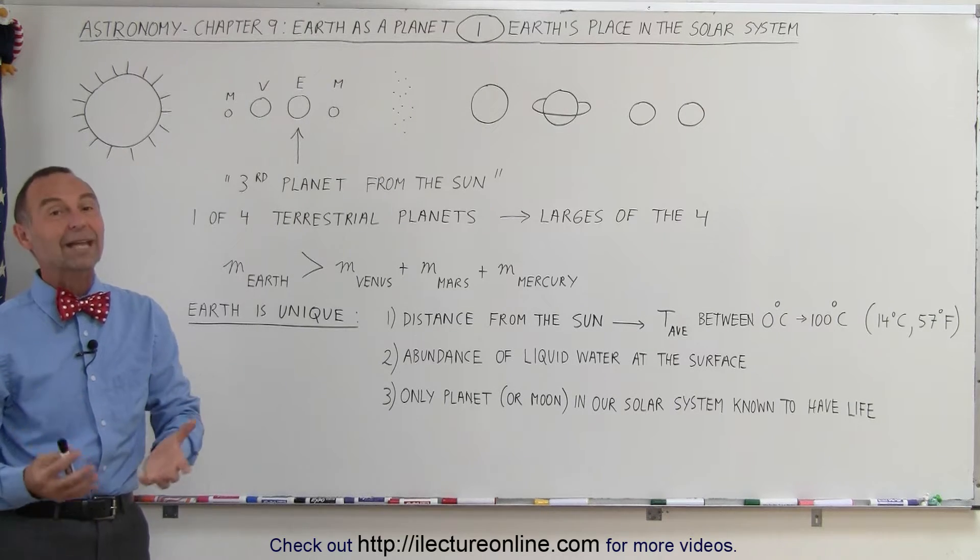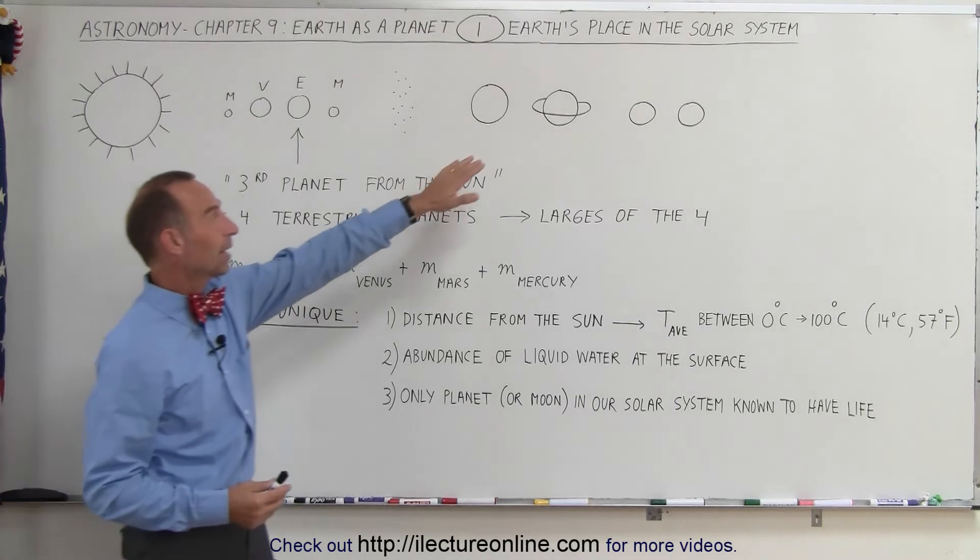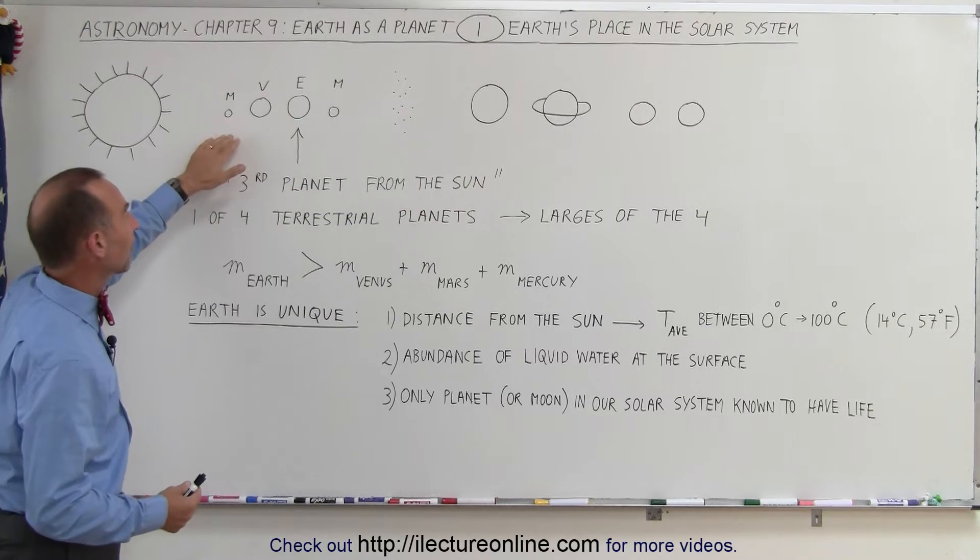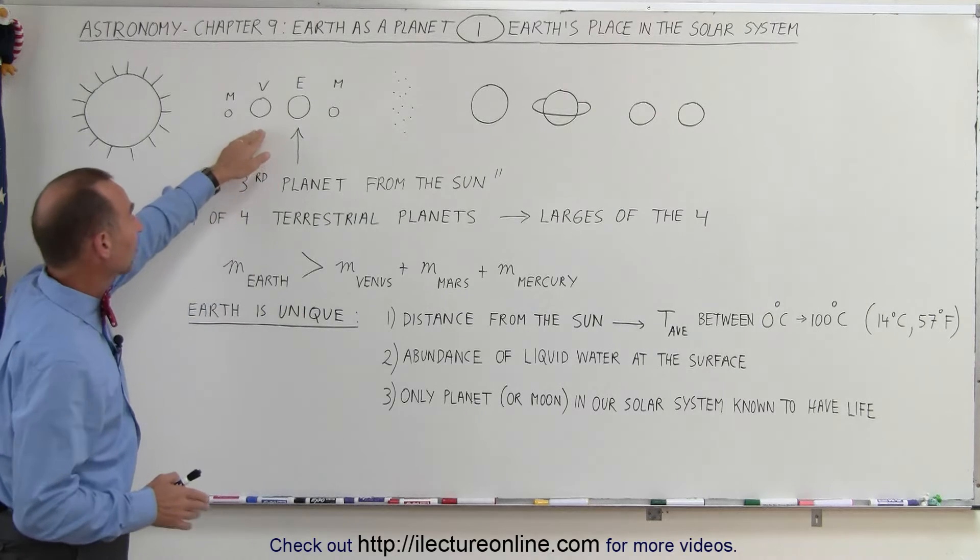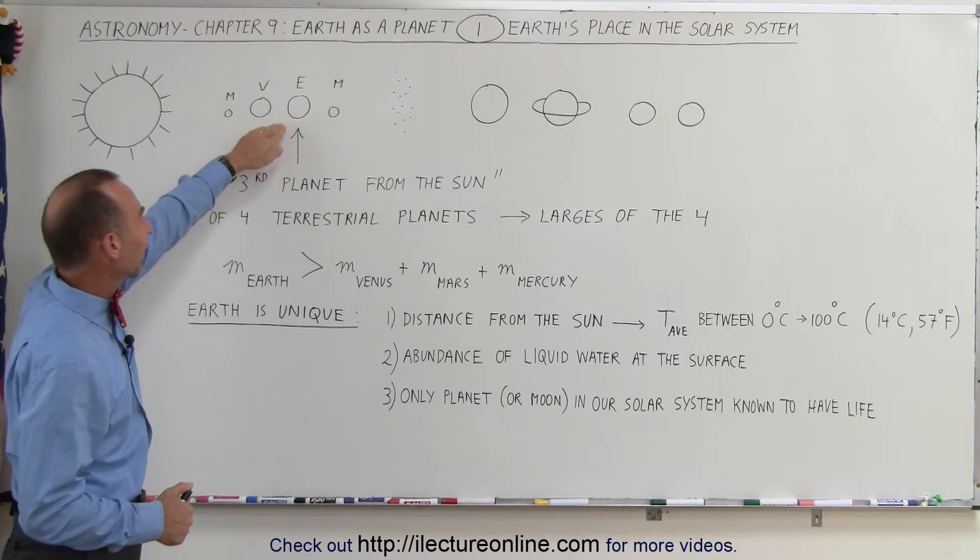But in the meanwhile, we are down to eight planets. We have the four gas planets, we have the four terrestrial planets, and we have an asteroid belt in between.